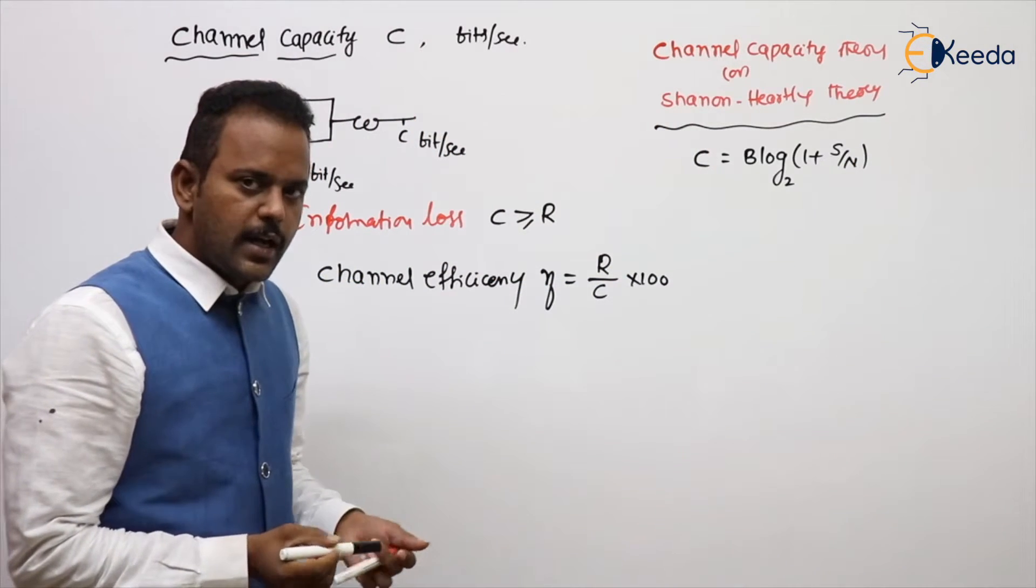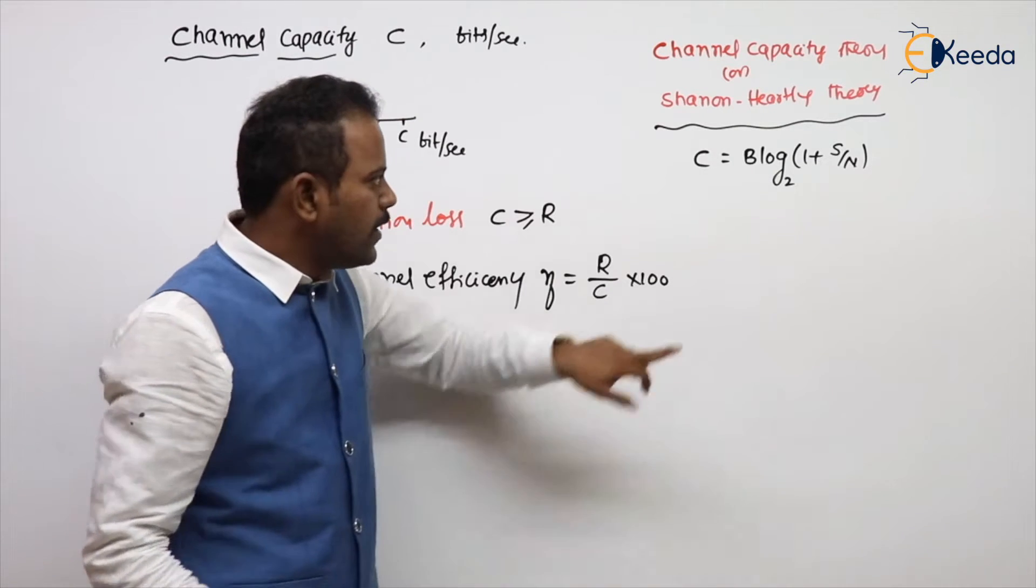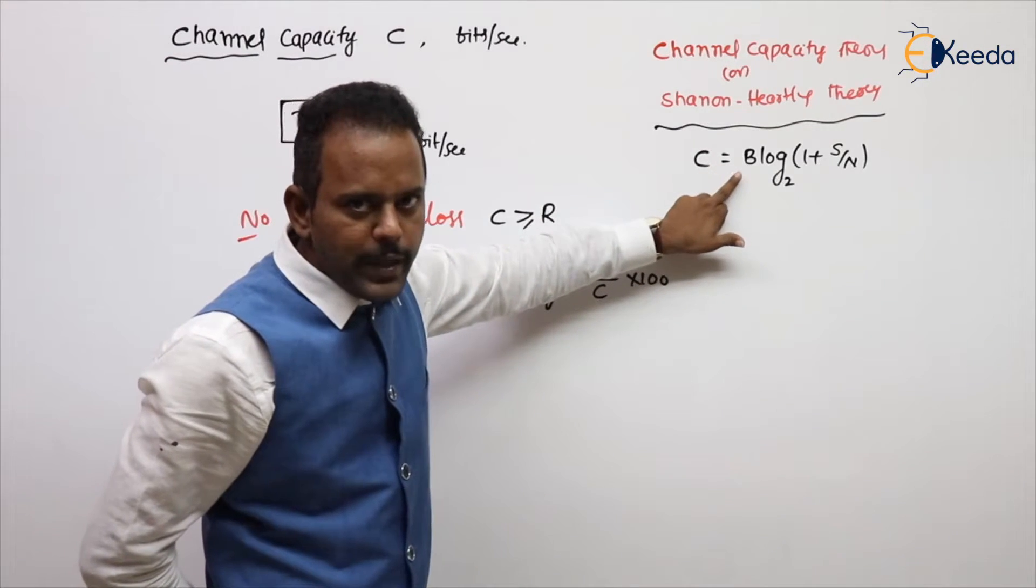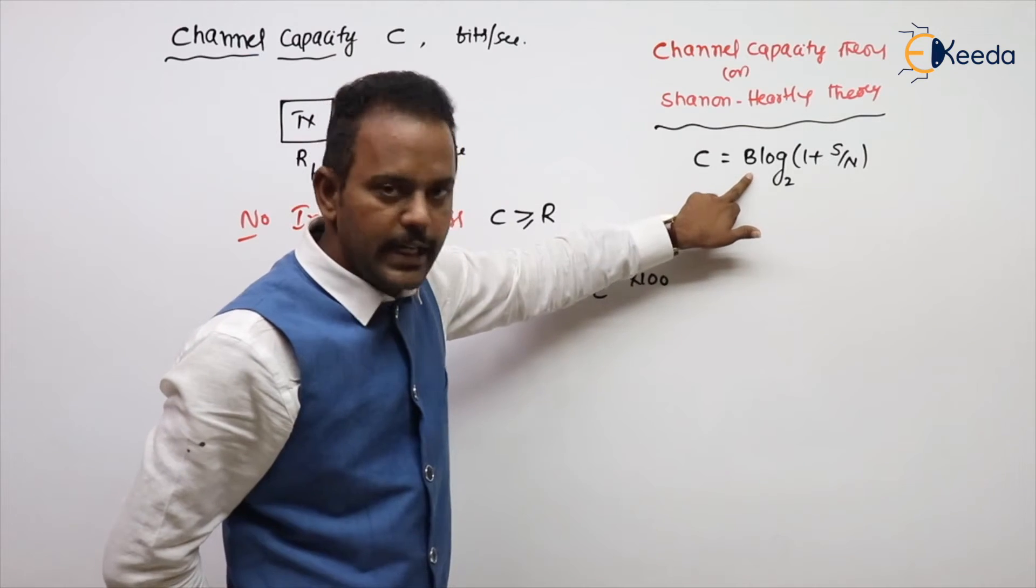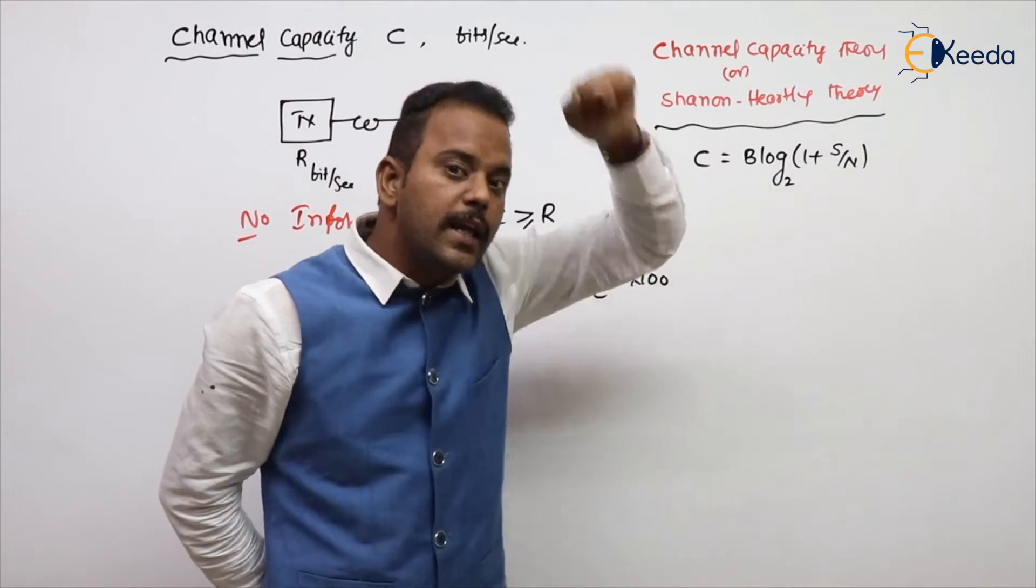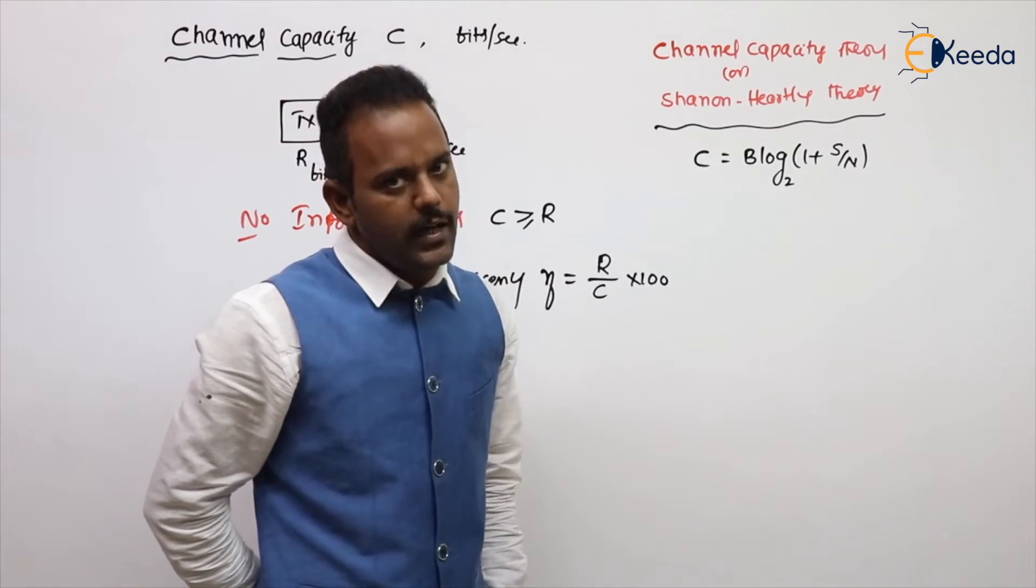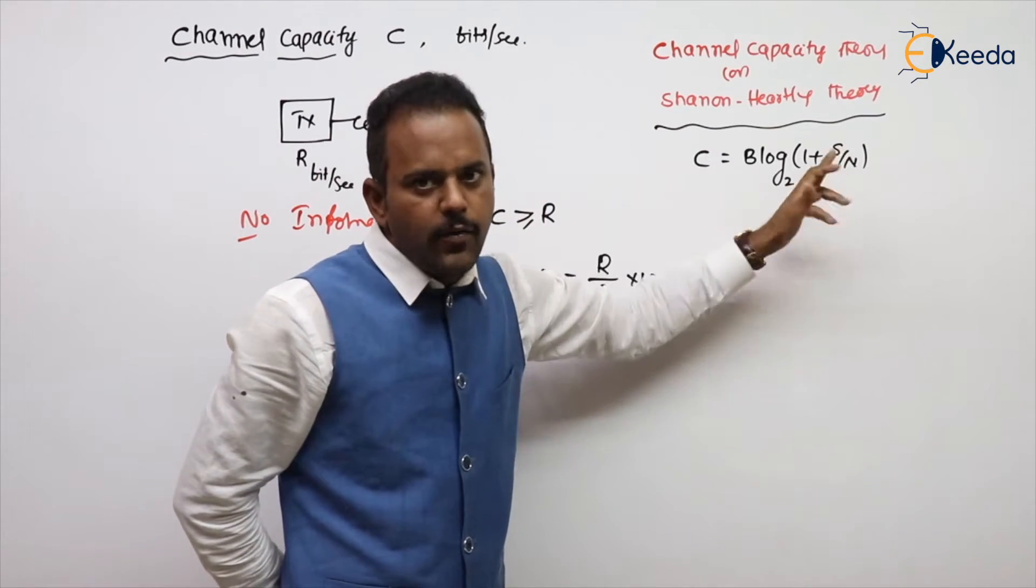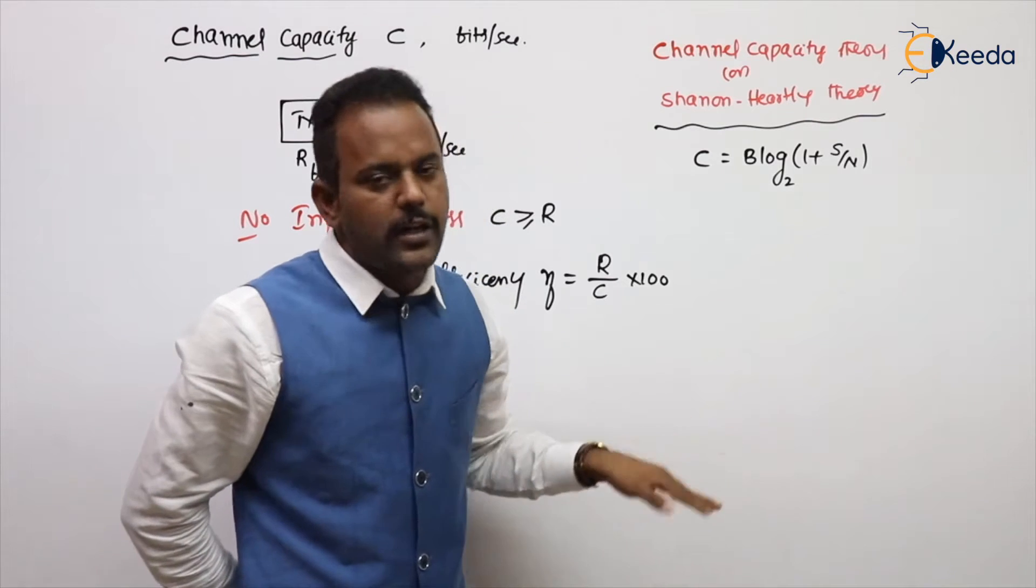This will give you the channel capacity measurement. It gives you the relation between channel capacity and bandwidth of a channel. Where C is channel capacity, B is the bandwidth of a channel in Hertz.